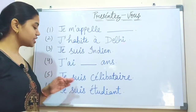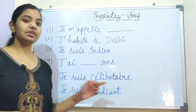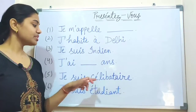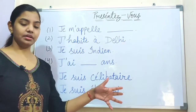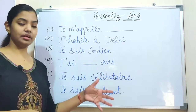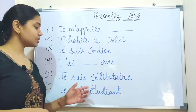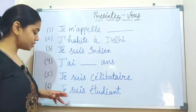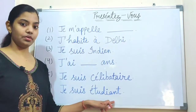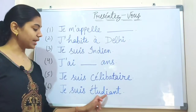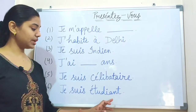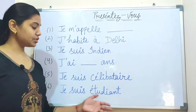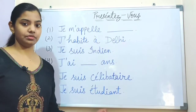Afterwards, you say: Je suis célibataire — that means 'I am single'. If you are single, you say je suis célibataire. Then you say: Je suis étudiant — which means 'I am a student'.